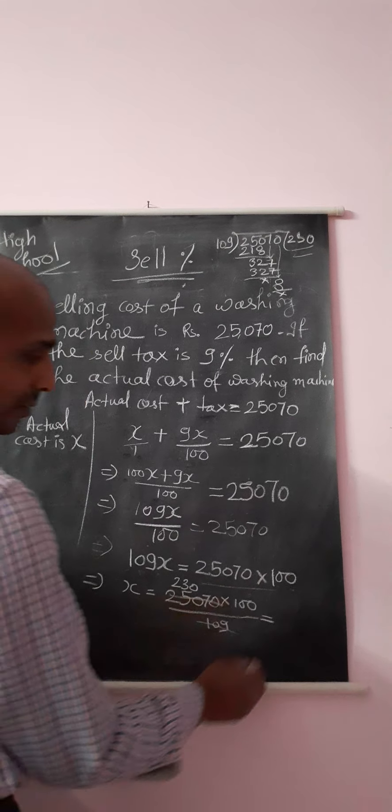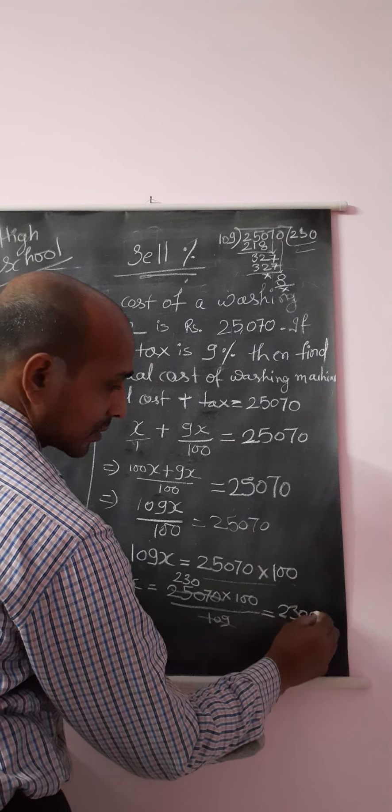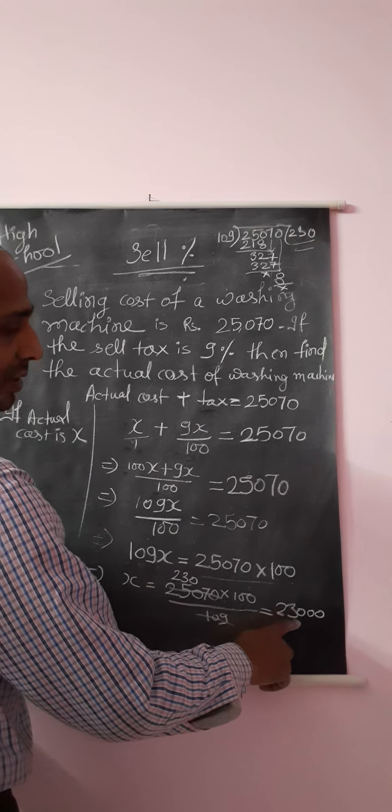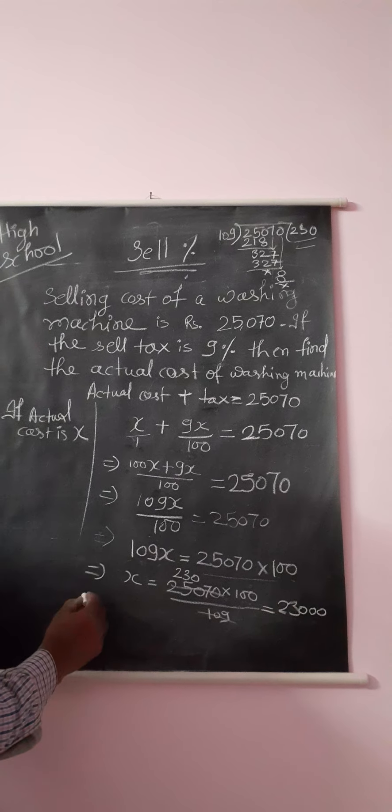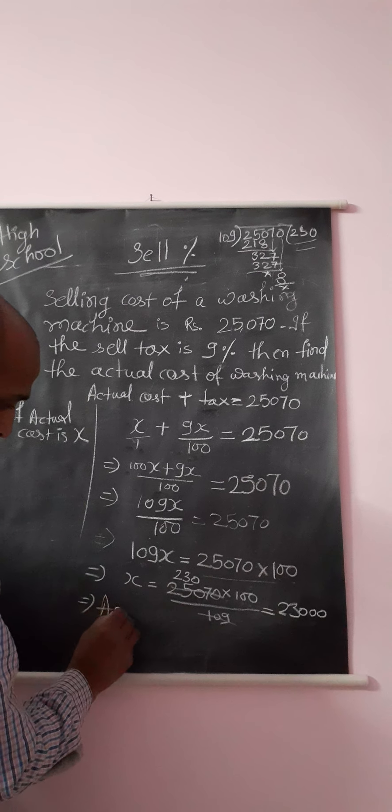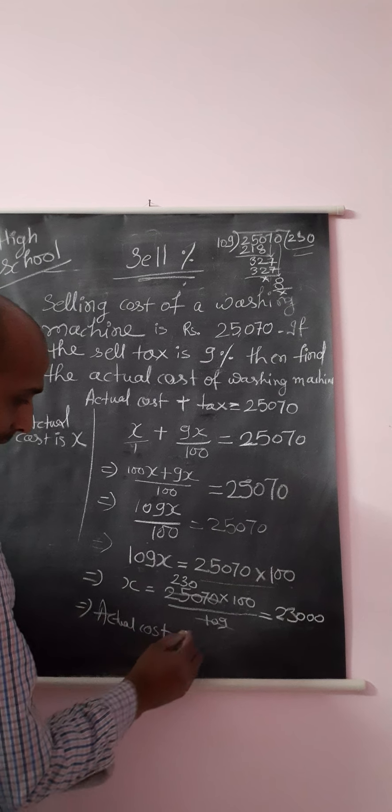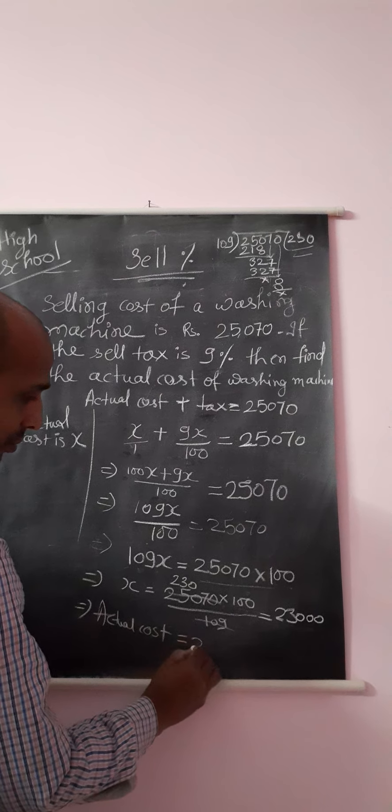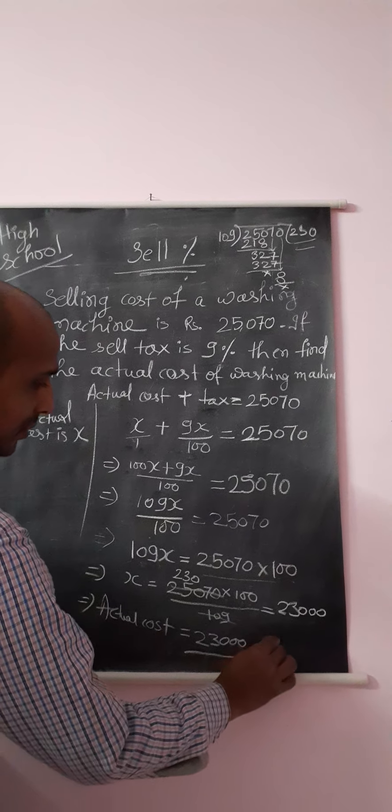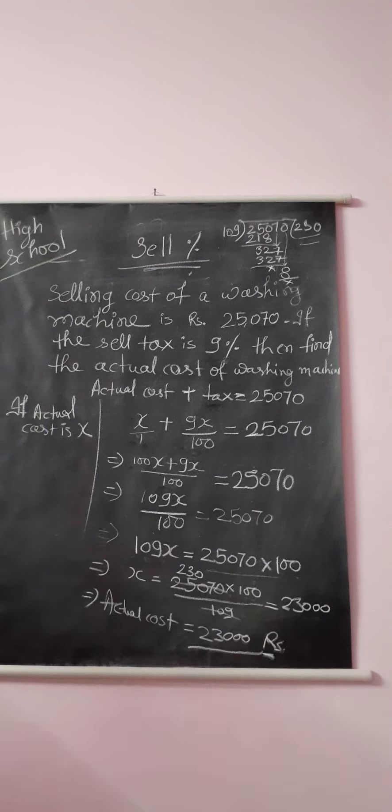So actual cost x equals 23,000 rupees. The actual cost is 23,000 rupees.